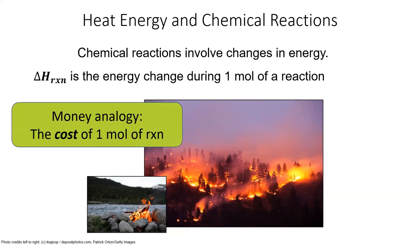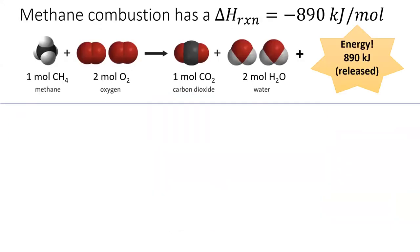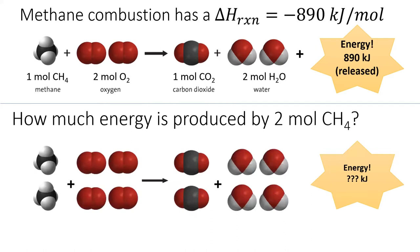To put it into our money analogy, the enthalpy of reaction is like the cost of buying or selling one mole of a reaction. Methane combustion has an enthalpy of reaction of negative 890 kilojoules per mole. So if I react one mole of methane with two moles of oxygen, I will get 890 kilojoules of energy along with my products. If I react twice as much methane, then I will get twice as much energy out.